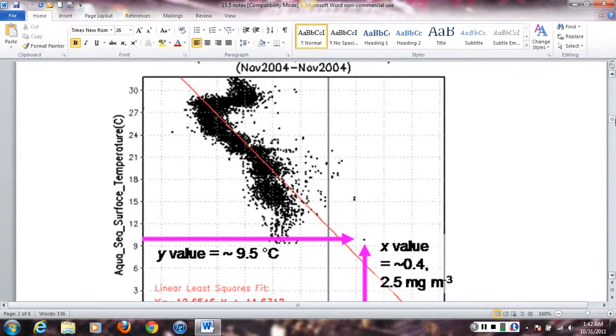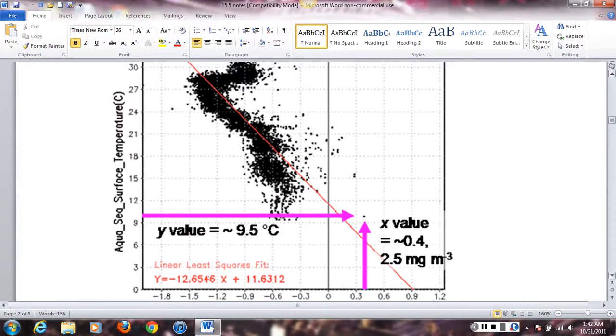Some more examples of scatter plots. Here's another one, and you can see in the middle here is a line of best fit. Down here is the equation, y equals negative 12.65x plus 11.6. These are all in slope-intercept form if you remember that from algebra.